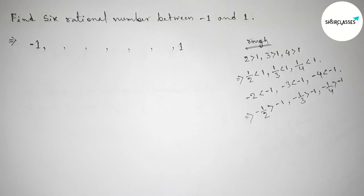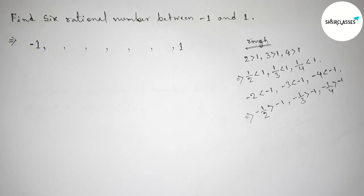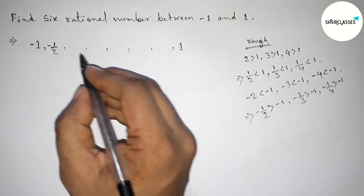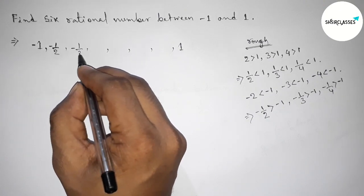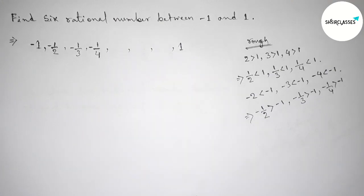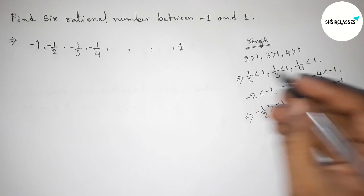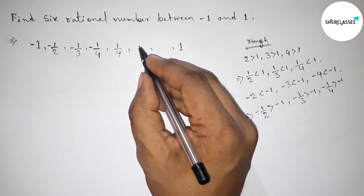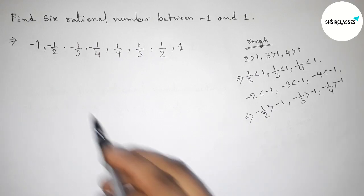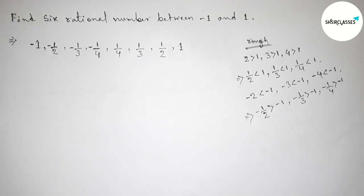So these three are also rational numbers between minus 1 and 1. Now writing down all the rational numbers between minus 1 and 1 in the blank spaces: the first rational number is minus 1/2, then minus 1/3, then minus 1/4, and now starting from 1/4, then 1/3, and the last one is 1/2.